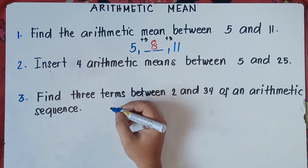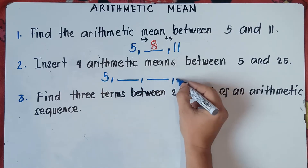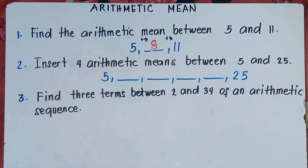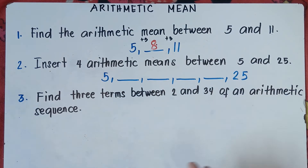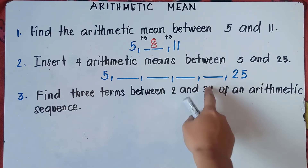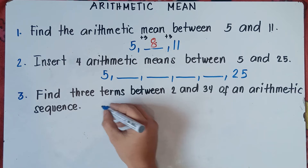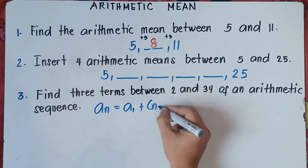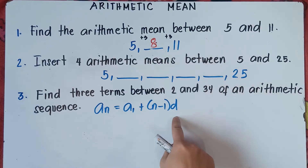So what if we have this kind of question: insert 4 arithmetic means between 5 and 25. We write 5, then insert 4 arithmetic means, and then 25. We need to find these numbers in between 5 and 25. We need to get the common difference. The formula is: a sub n equals the first term plus (n minus 1) times the common difference.